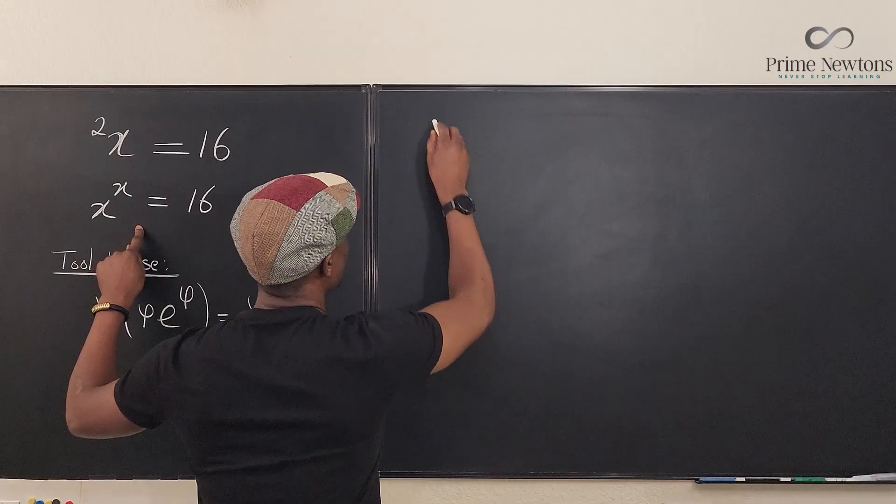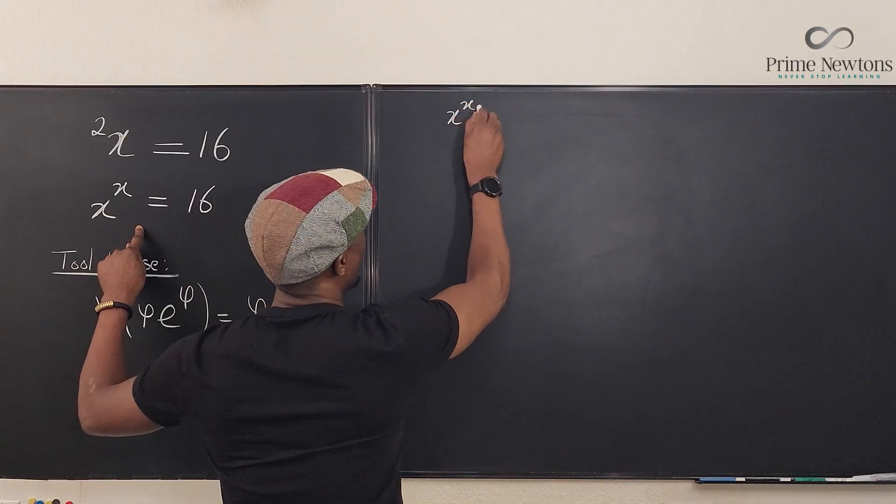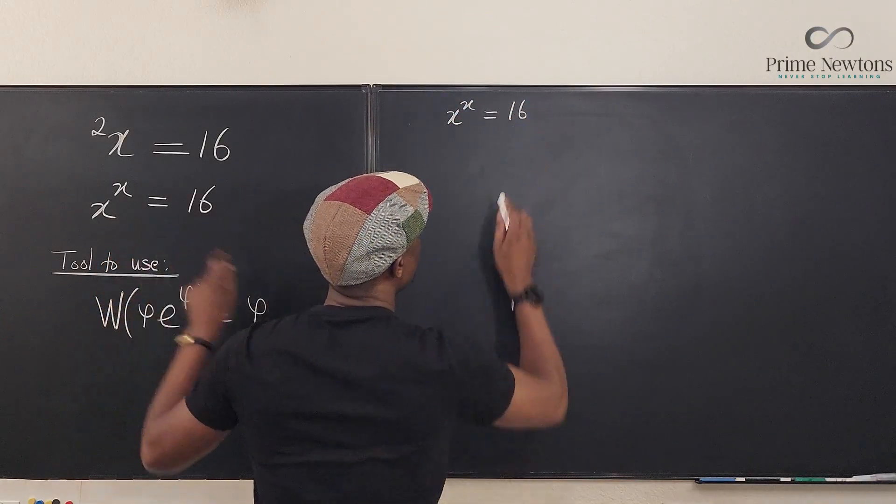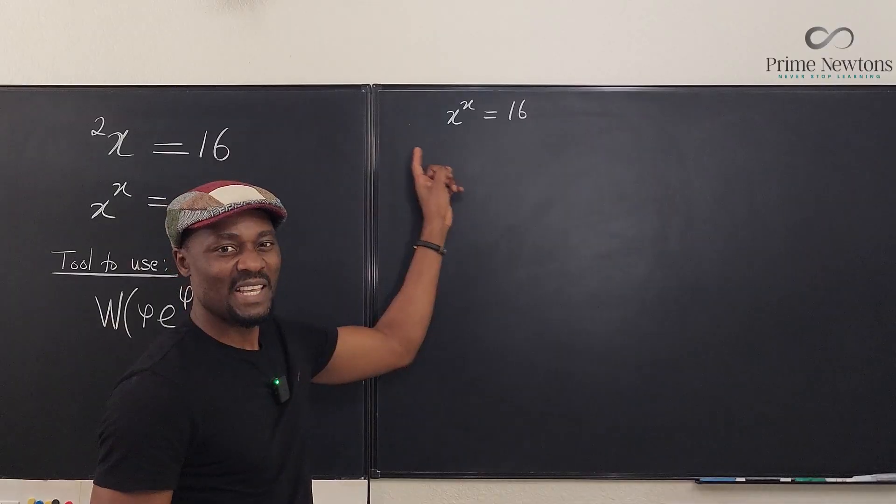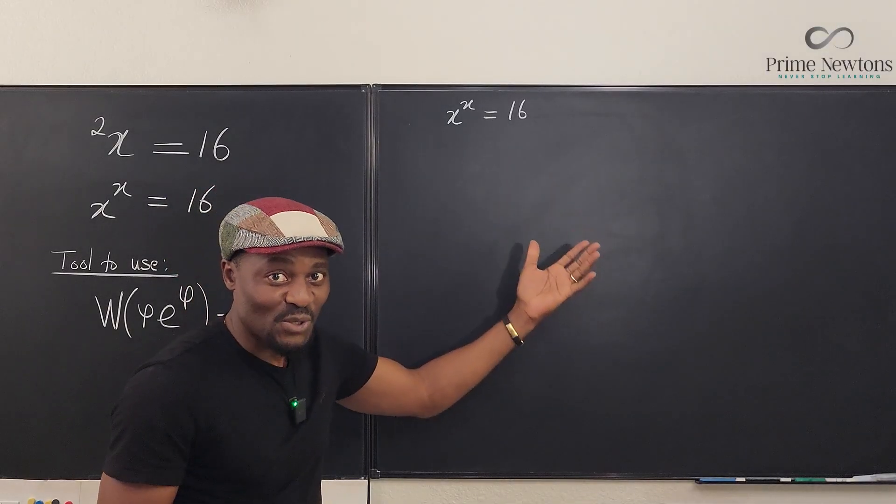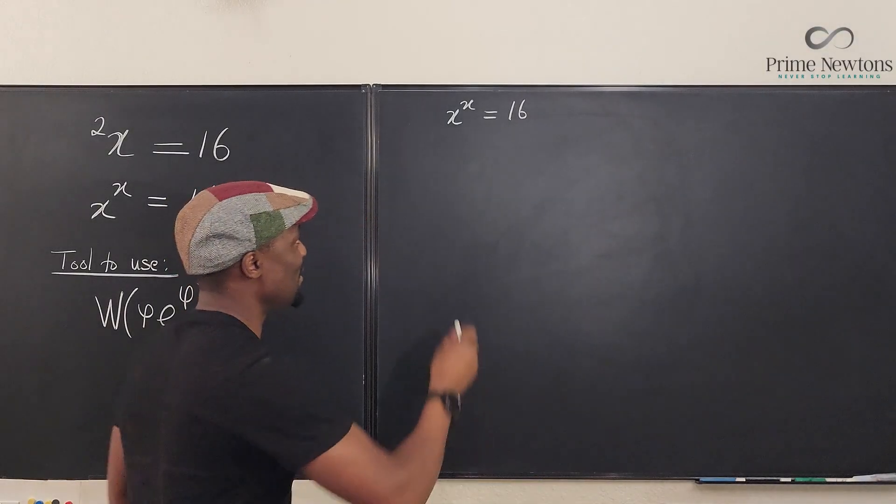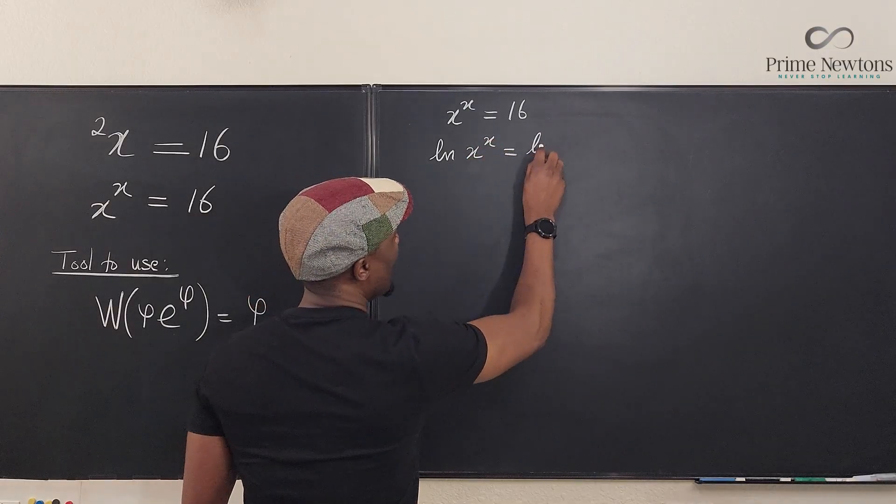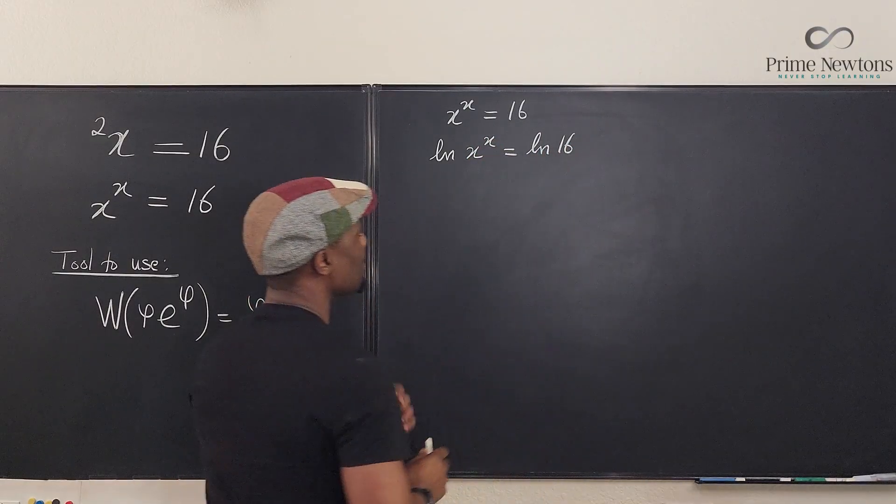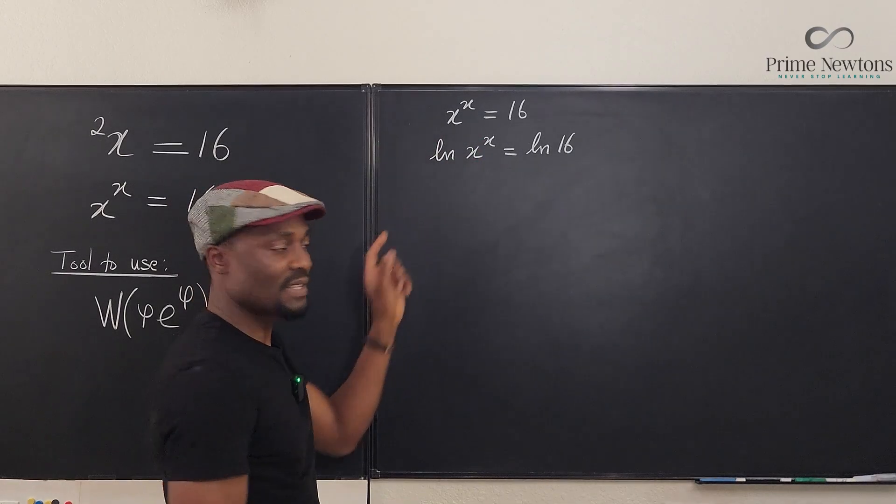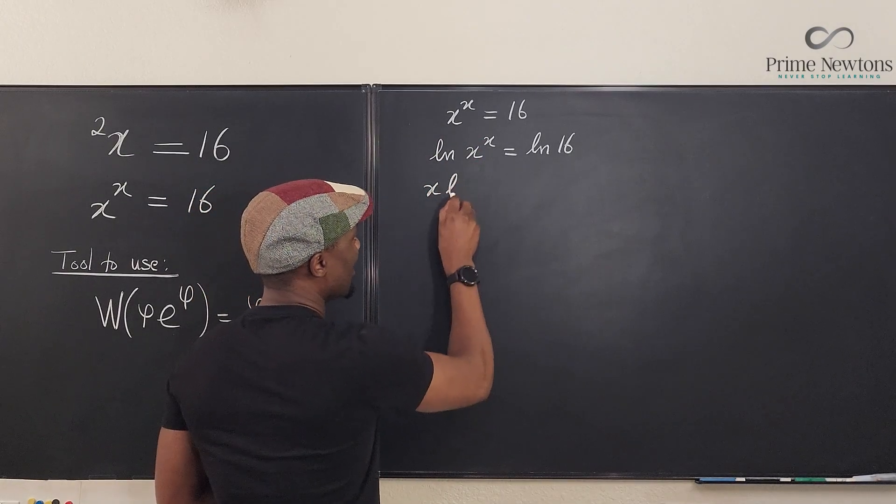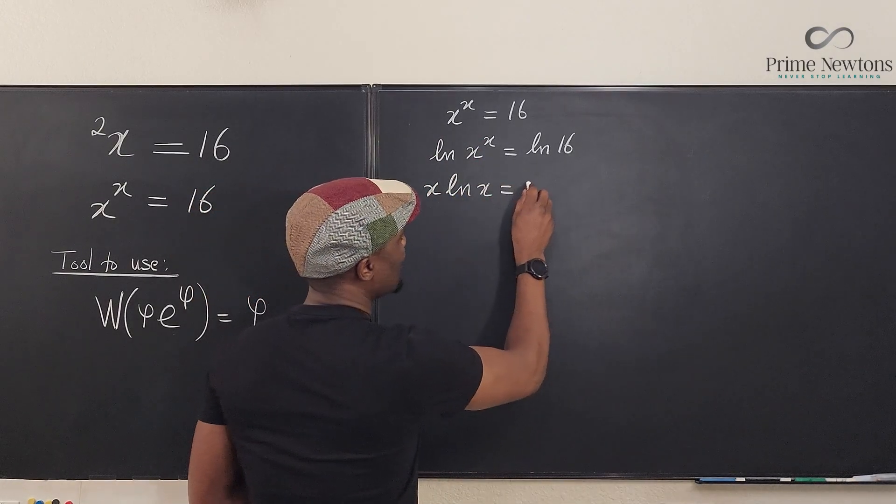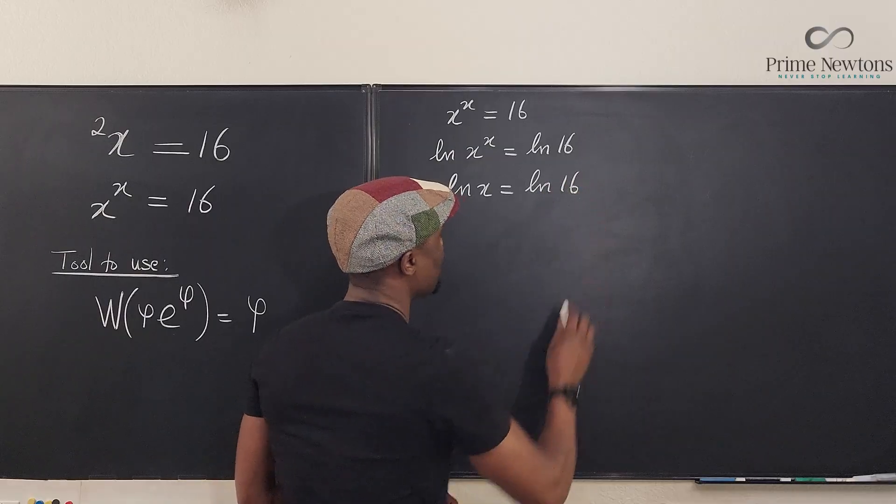Let's begin with this. We're going to say that x to the x equals 16, and we can rewrite this by taking the natural log of both sides like we would normally do. So we'll say ln of x to the x will be equal to ln of 16. I'm going to bring down this x, so I have x ln of x equals ln of 16.